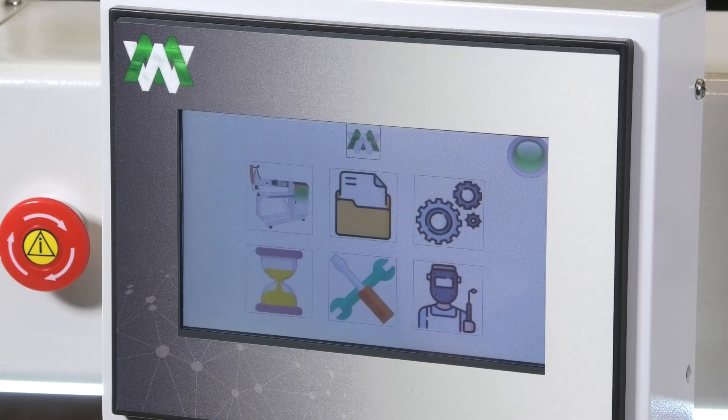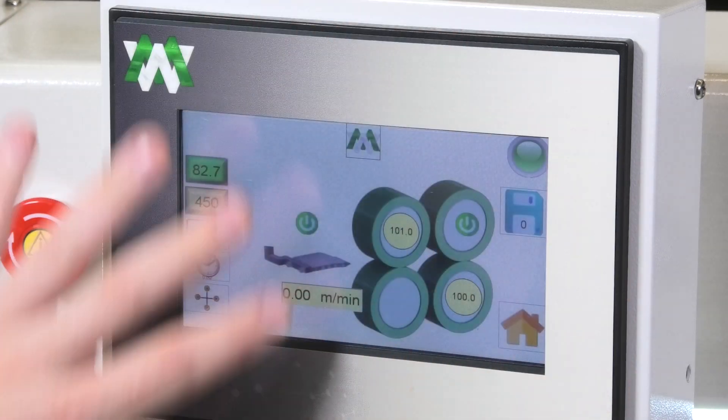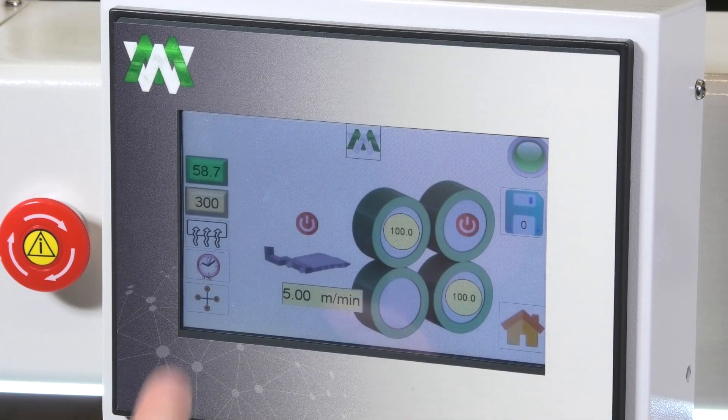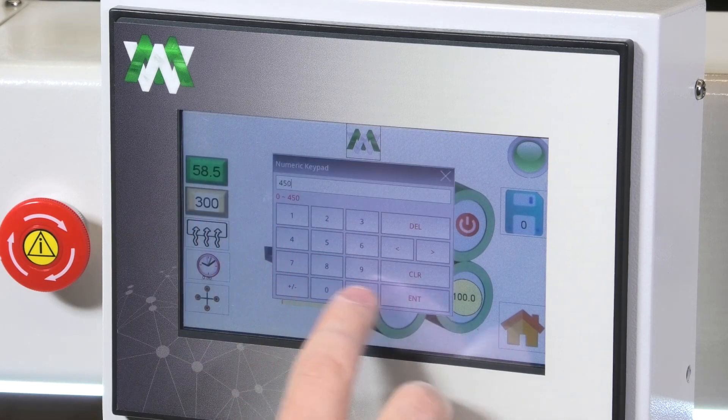I'll be demonstrating how to use the HMI screen for your T300 machine. Right now we're in the operators menu. You can see the temperature on the hot wedge and our set point to input the temperature for your needs.